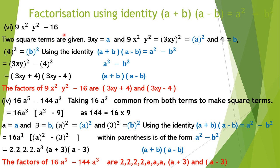Now 9X²Y² − 16. The term 9X²Y² is a perfect square of 3XY, so A = 3XY and A² = (3XY)². Also, 16 is the square of 4, so B = 4 and B² = 16. Using the identity (A+B)(A−B) = A² − B², we write (3XY)² − (4)², giving factors (3XY + 4) and (3XY − 4).